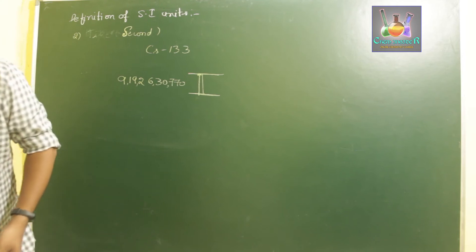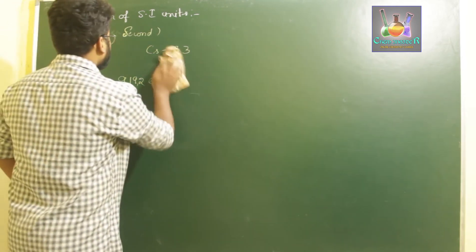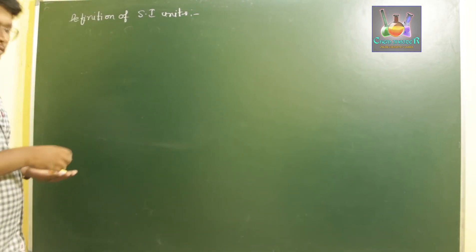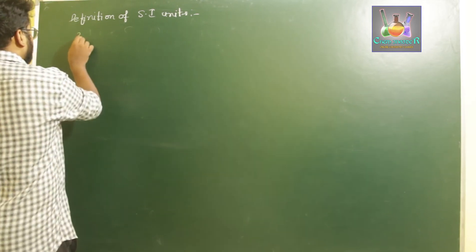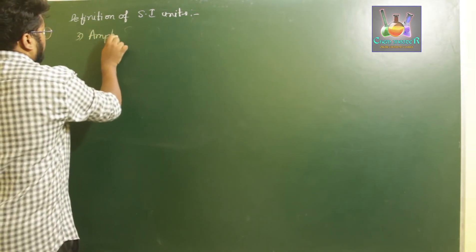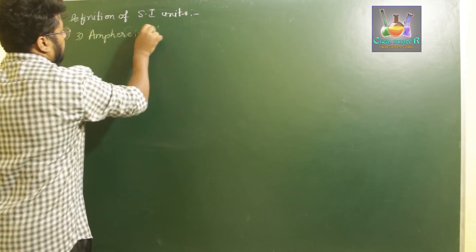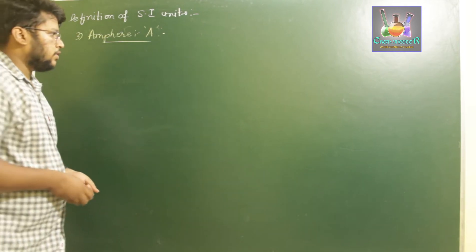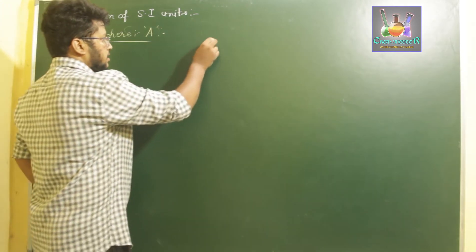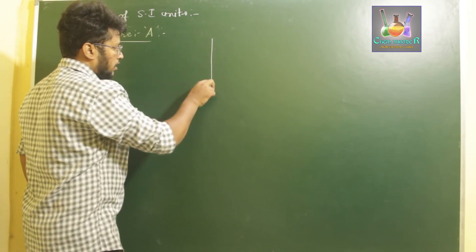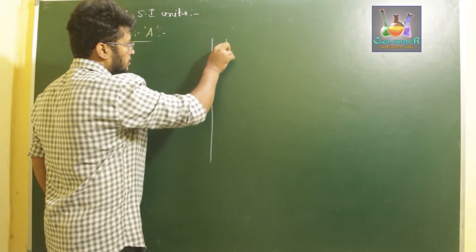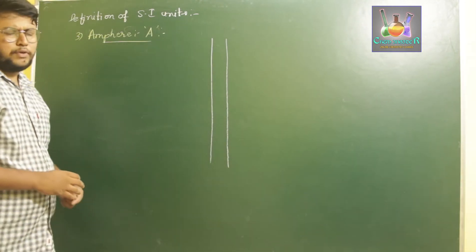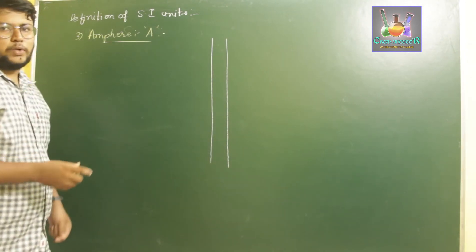Next is the definition of electric current — ampere, denoted by symbol A. To define ampere, we consider a system of two very fine conductors of infinite length, with very negligible cross-section, placed parallel to one another.